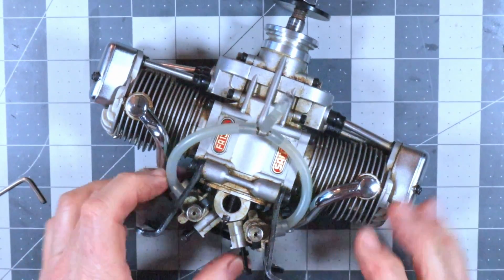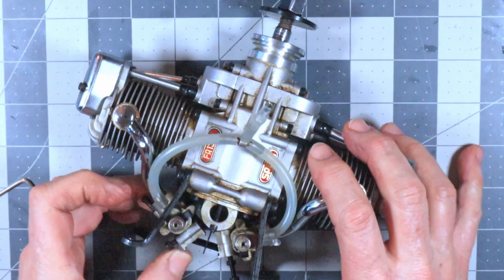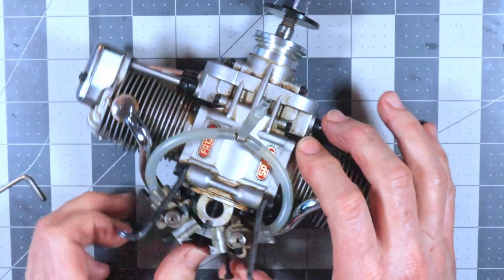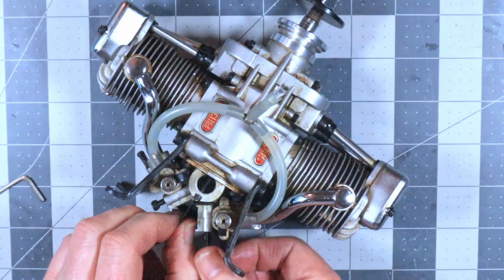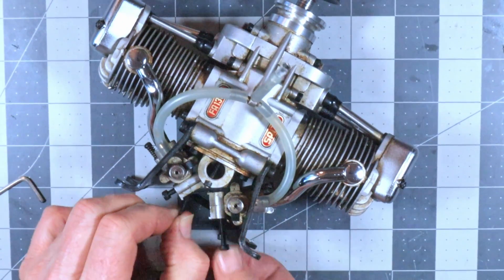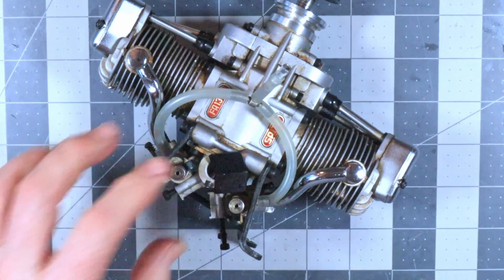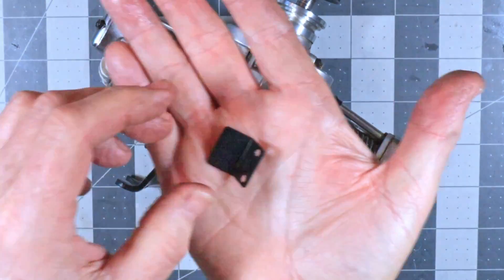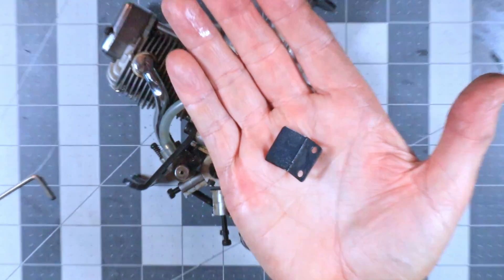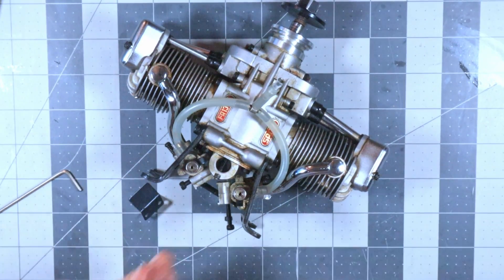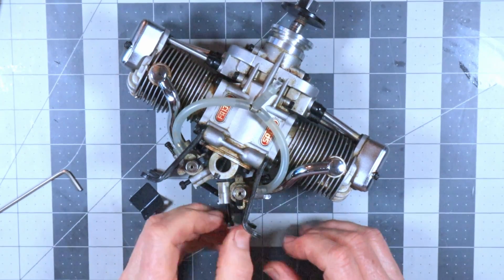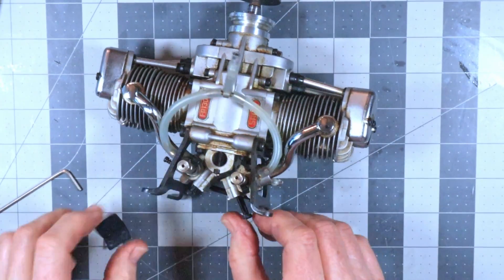So I've got the screws out of here and it looks like maybe I can take this piece of metal that is the baffle. Take that out. That's a baffle that separates the air flowing into each of these.